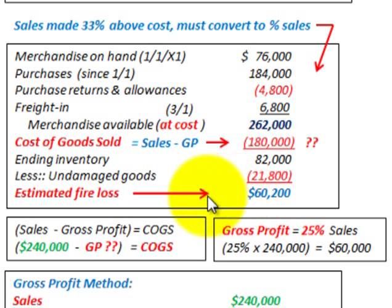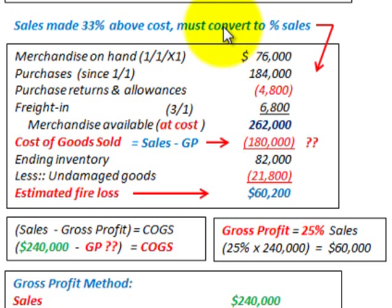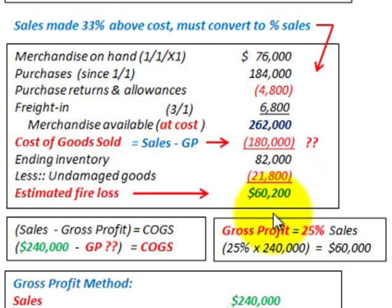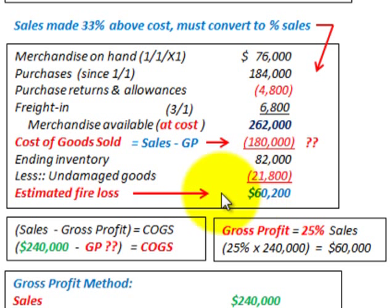So that takes care of the example where sales are made at 33% above cost. We had to convert that 33% above cost to 25% of sales. We determined cost of goods sold, and estimated our fire loss to be $60,200.